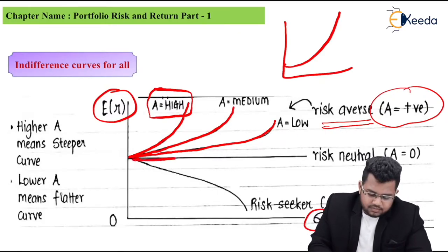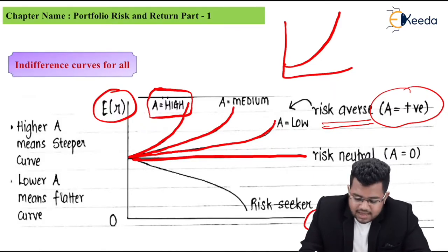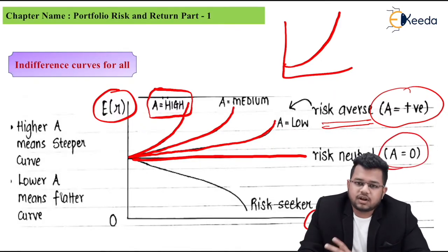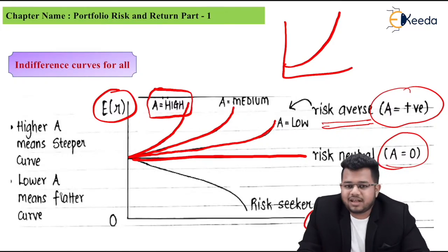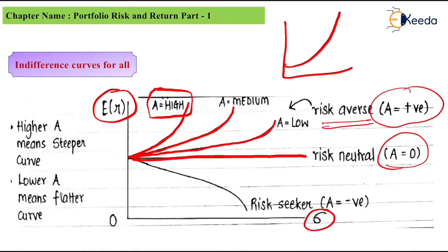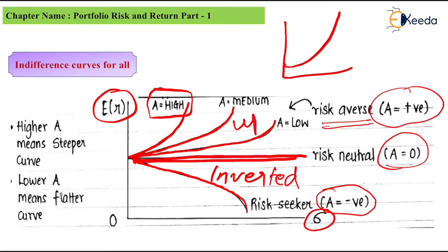Next, this straight line which is flat, is for risk neutral where A is zero. They don't care, so their indifference curve is flat because they are anyway indifferent. And for risk seeker, it goes inverted. For risk seeker, the curve is inverted. Why is it inverted? Because A is negative for a risk seeker. I can say that if it's flat, A is zero. If A is positive, it goes above the flat line upward, and if A is negative, it goes downward which is an inverted curve.